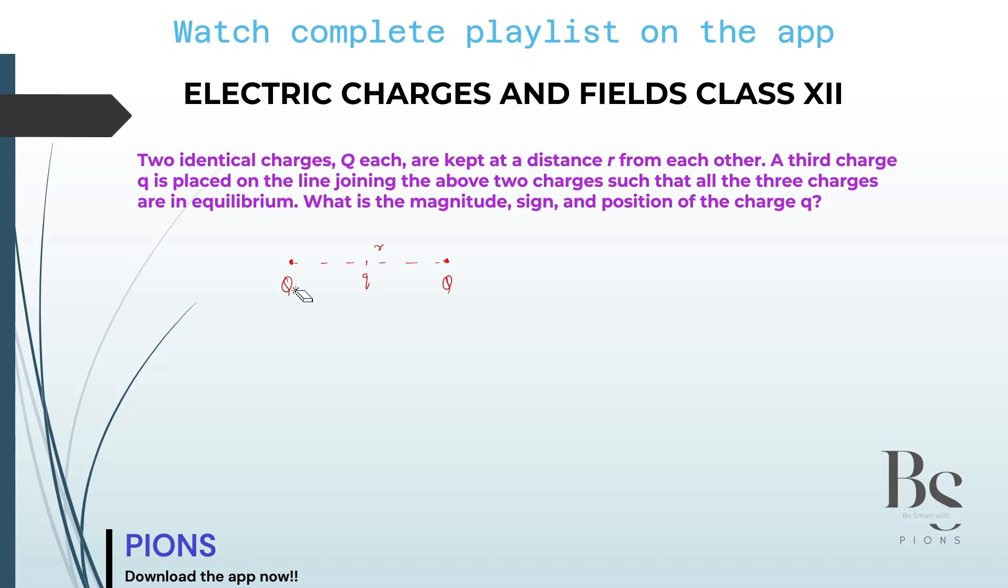So this Q and this Q were already in equilibrium, but now when you place the third charge, the whole system goes in equilibrium. The question is asking: what is the magnitude, sign and position of the charge?